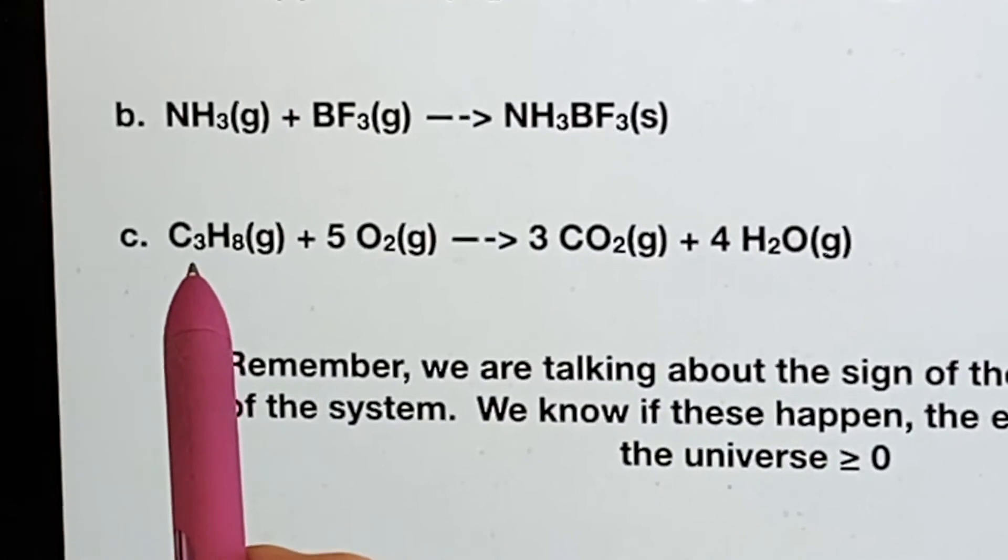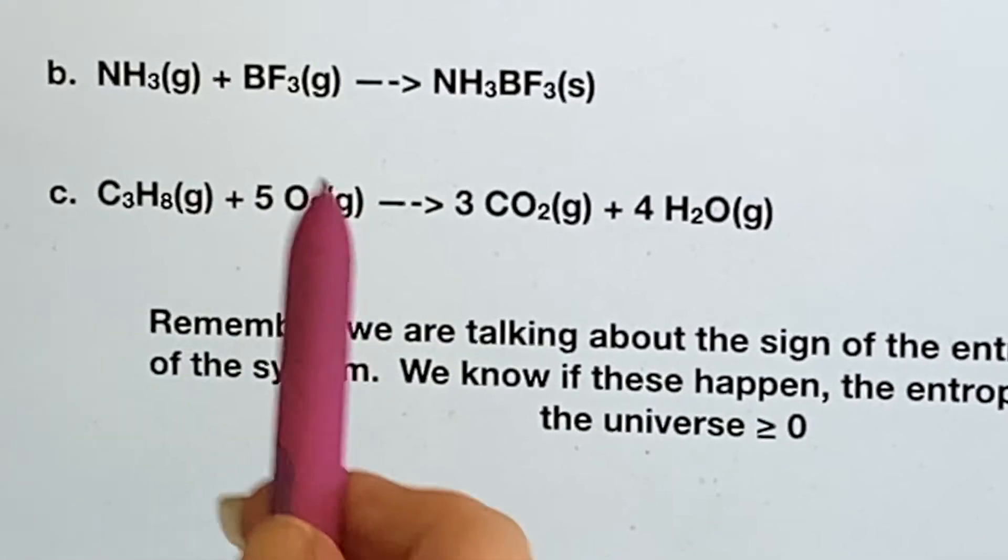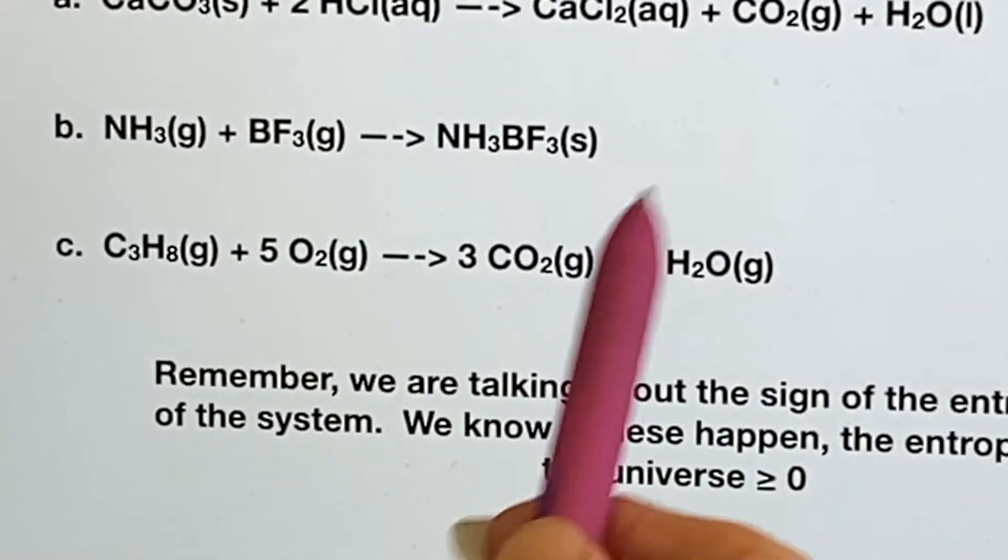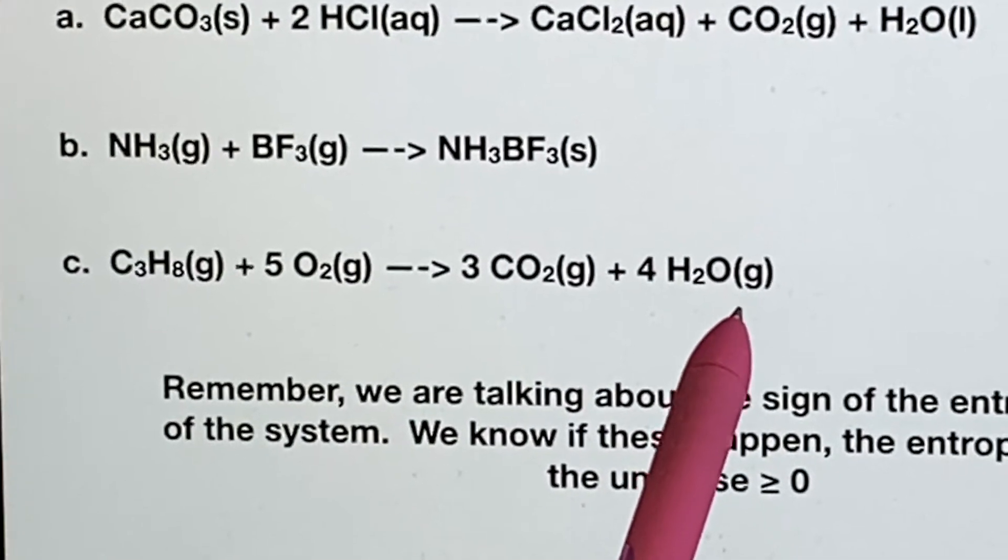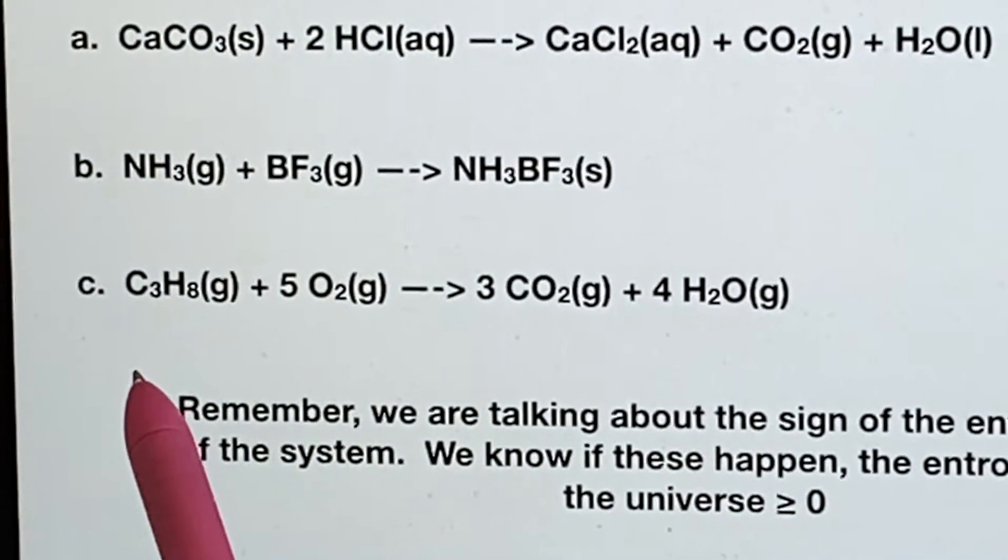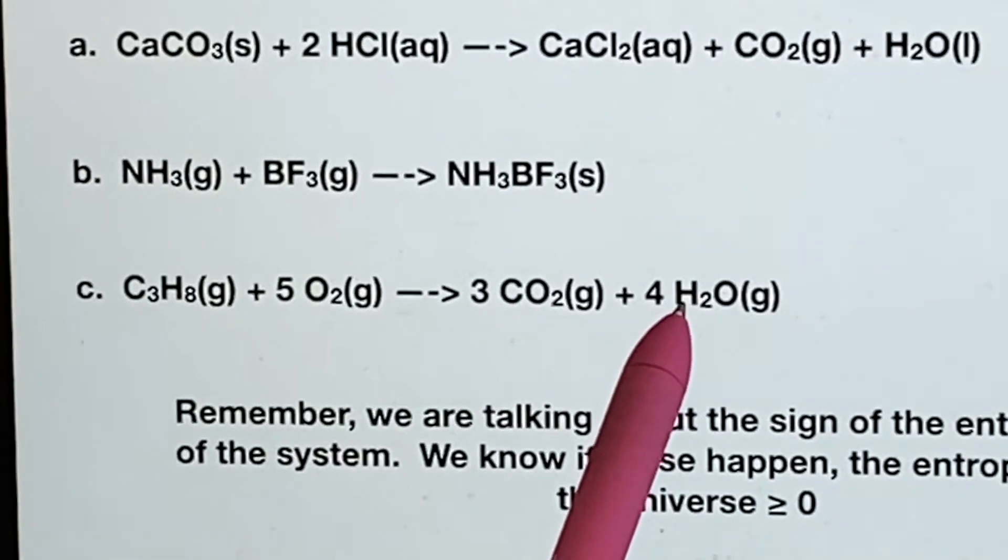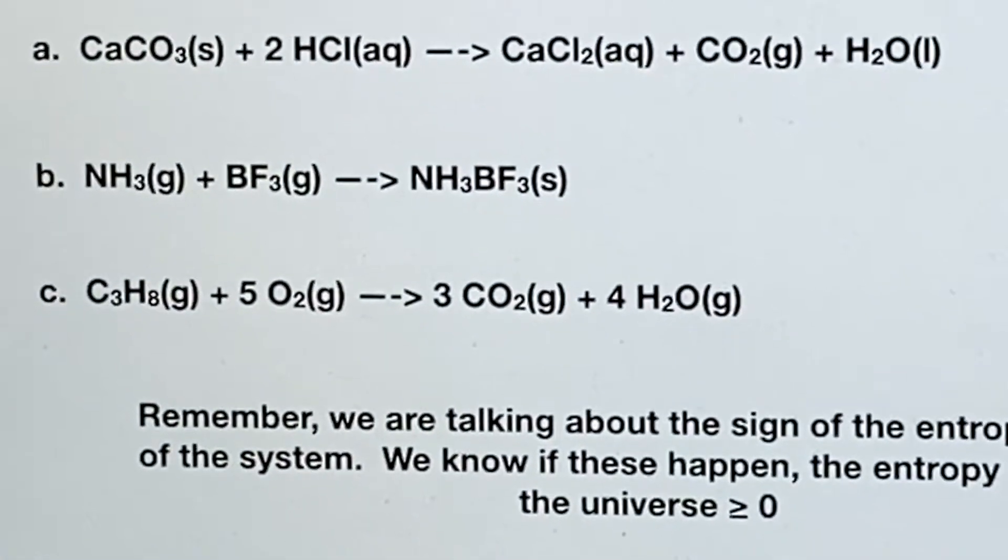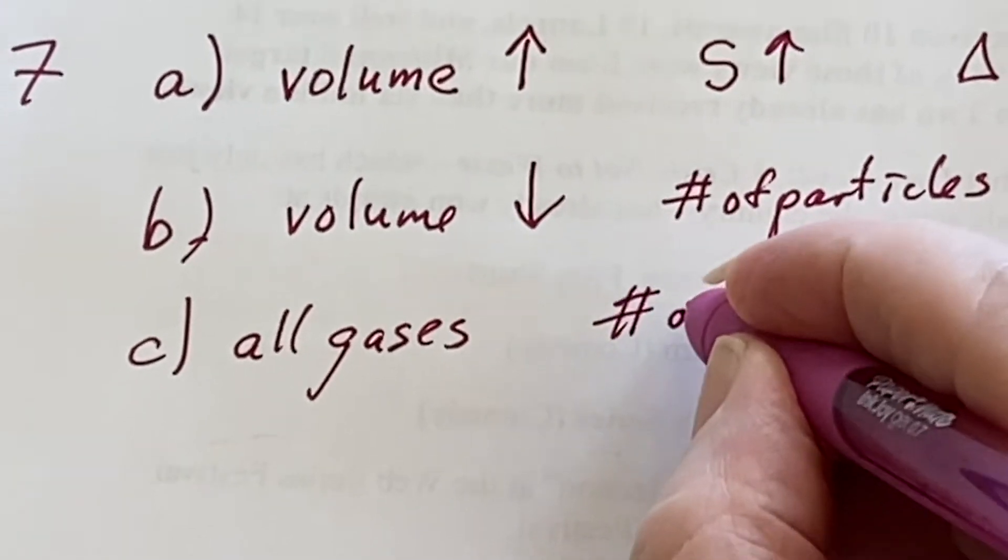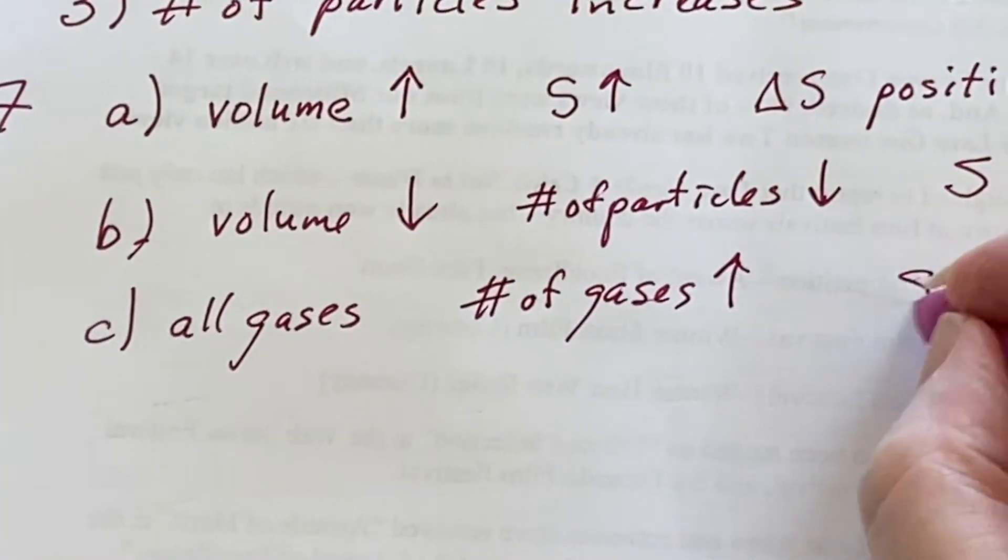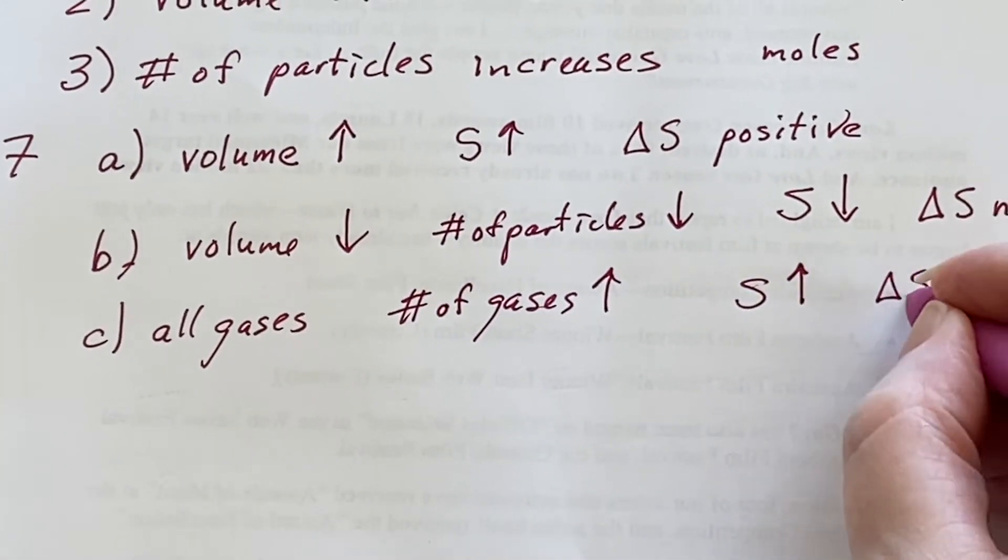That's propane and I'm going to undergo oxidation. I'm burning it and I'm creating carbon dioxide and water. Gas, gas, gas, gas. Well, they're all gases, but the number of particles is different. Over here is one plus five is six, but three plus four is seven. So in this case, since they're all gases, the important thing is that the number of gases went up from six to seven. So I expect that entropy has gone up and delta S is positive.